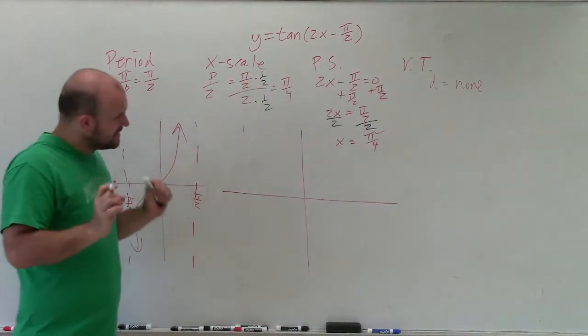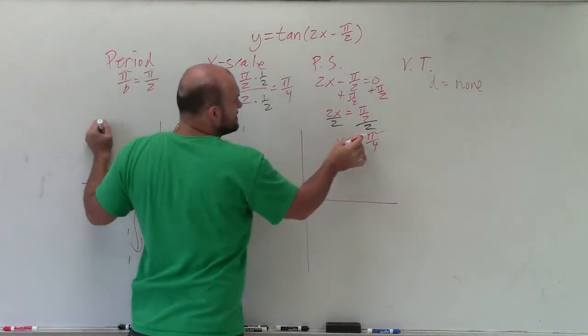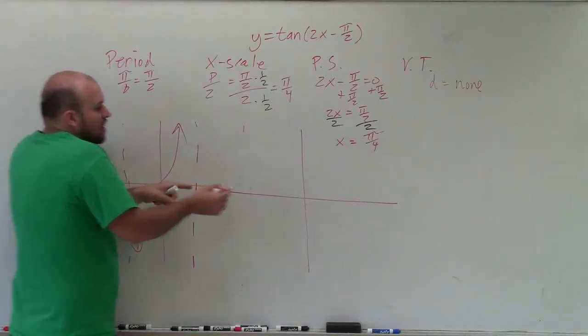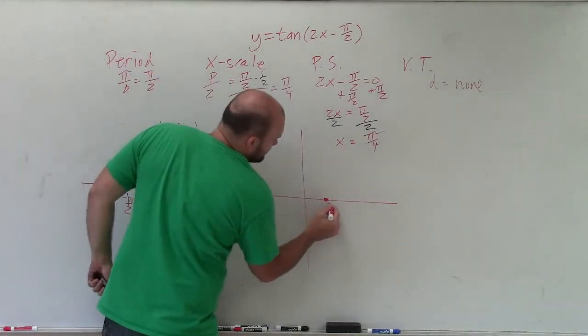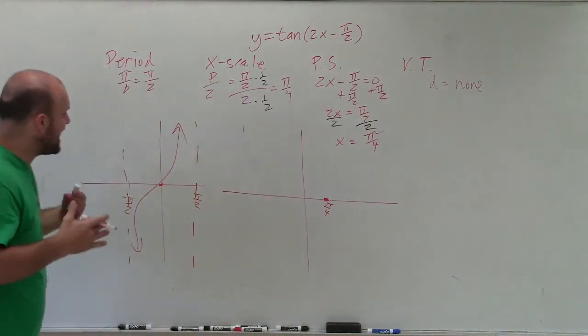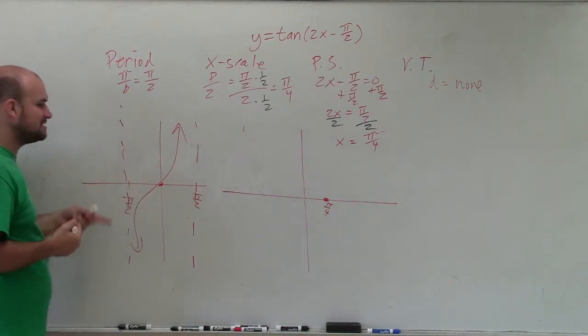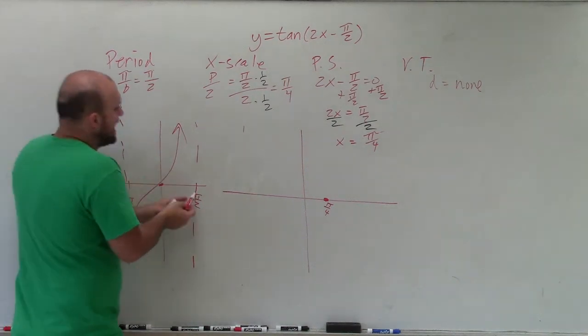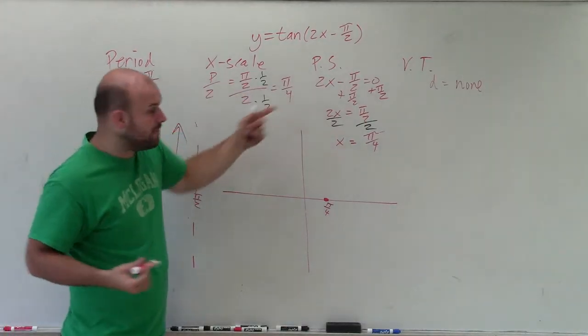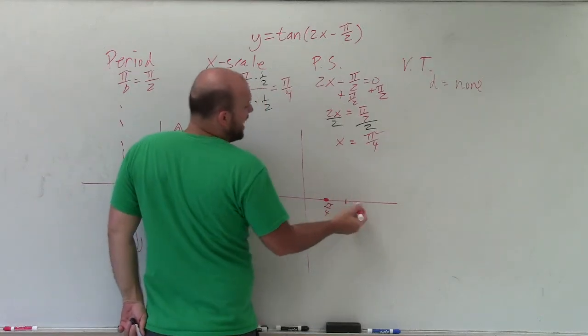So let's go and take a look at now. Now we have my phase shift is at pi over 4. That means instead of starting at 0, I can now start at pi over 4. All right, then the next thing is the x scale. Now remember, in the parent graph, the x scale is pi halves. That means from the intercept to the asymptote is pi halves. Now my x scale is pi over 4. That means from my intercept to my next asymptote is pi over 4.